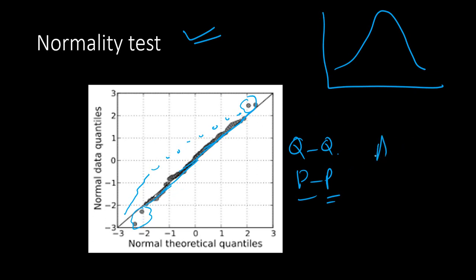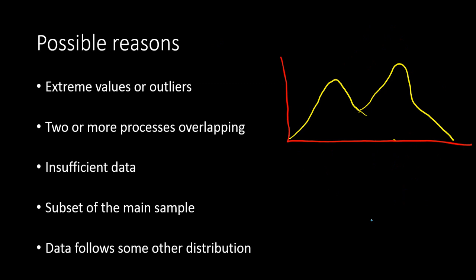You can also do statistical tests like the Anderson-Darling test and the Kolmogorov-Smirnov test to find out whether data is normally distributed or not. If it is not normally distributed, there could be a number of reasons. Without knowing the reasons why the data is not normally distributed, you should not go ahead with any remediation or diagnostic operation on your data. First understand what exactly the reasons are.